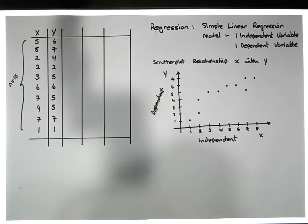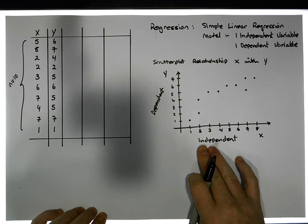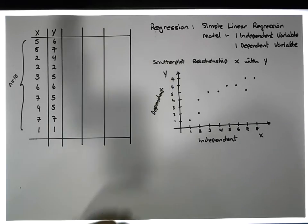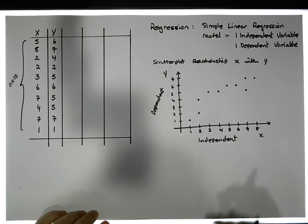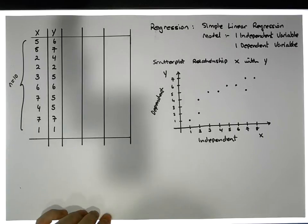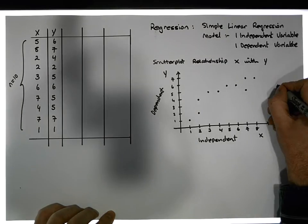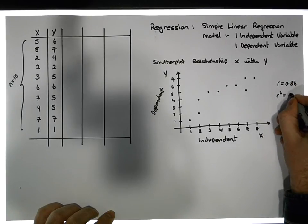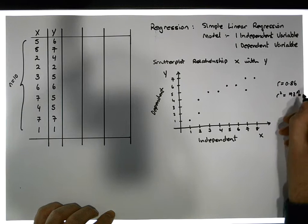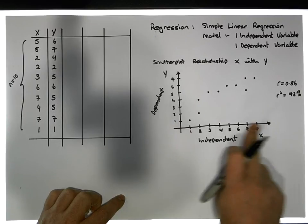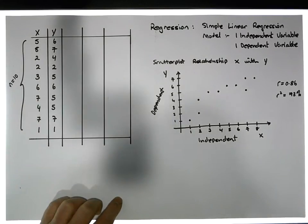So what we have is a scatter plot of the relationship between the independent and dependent variable. In the previous video we assessed the strength of association using the correlation coefficient between these independent and dependent values, and we found that r was equal to 0.86, and r squared was approximately 73%, meaning that 73% of the variation in the dependent variable seems to be accounted for by the variation in the independent variable.